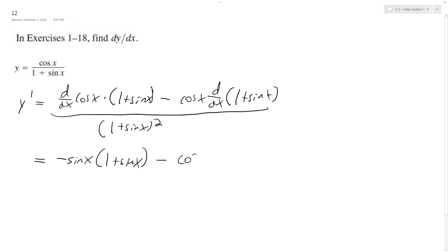minus, and then derivative of 1, 0, and then derivative of sine of x is cosine x. So we get cosine x here.